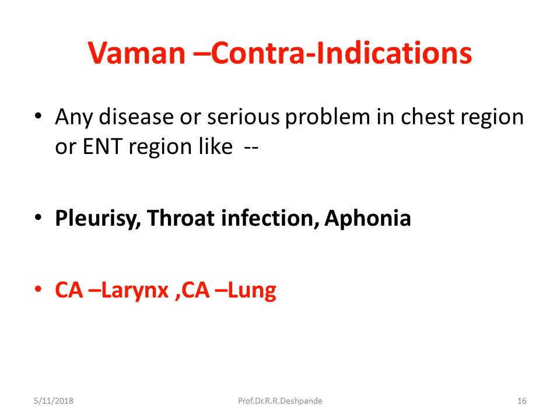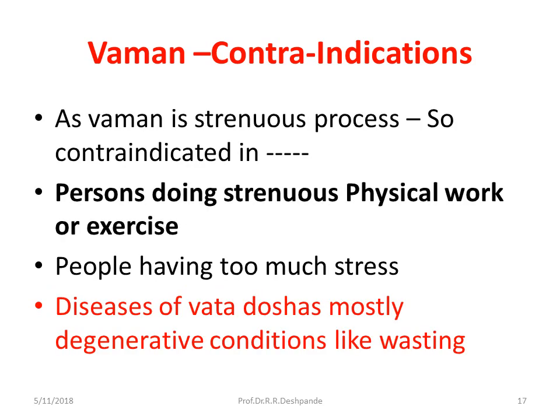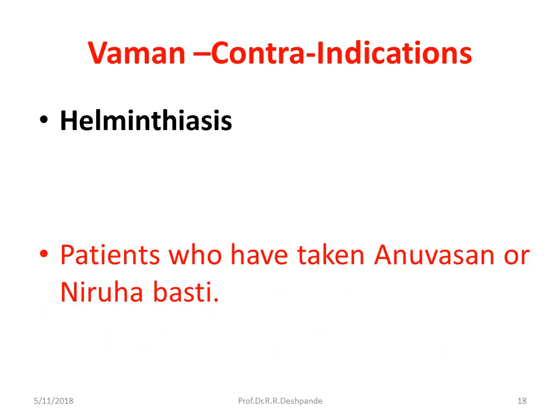Continuing with contraindications: any serious disease or problem in the chest region, or ENT (ear, nose, throat) — Vamana should be avoided. For example, in cases of pleurisy, throat infections, or aphonia — patient cannot speak due to cancer of the larynx or lung — Vamana should be avoided. Vamana is contraindicated in persons doing strenuous physical work or exercise, people having too much mental or physical stress, and Vata-dominant degenerative conditions. Helminthiasis or worm infestation — Vamana should also be avoided.